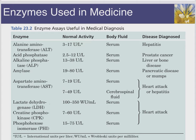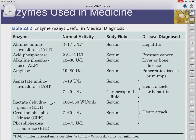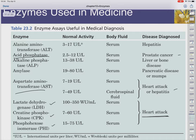Enzymes are also used as diagnostic tools beyond lactate dehydrogenase. Increases in creatine phosphokinase or phosphohexose isomerase can indicate heart attack. Seeing aspartate aminotransferase increase can show hepatitis or heart attack. Prostate cancer can be detected with acid phosphatase increase in the serum.